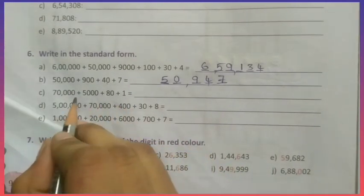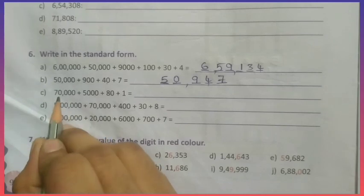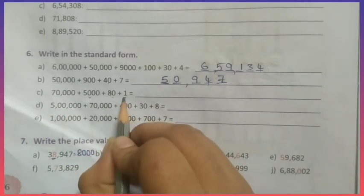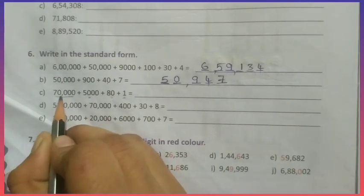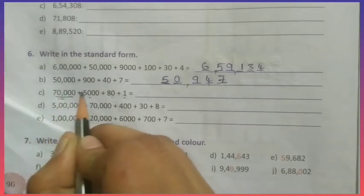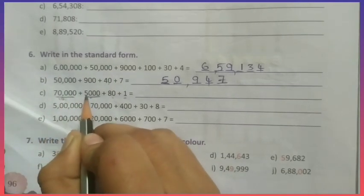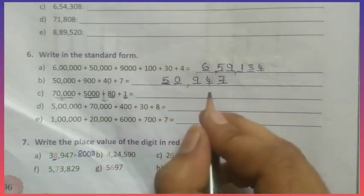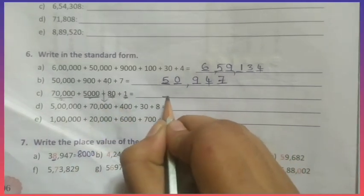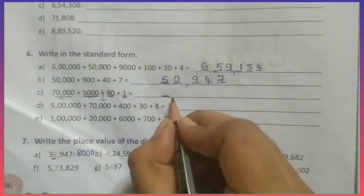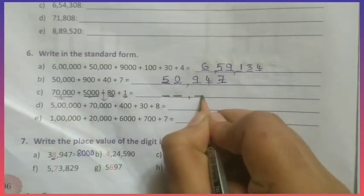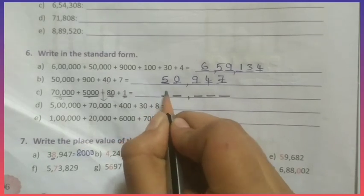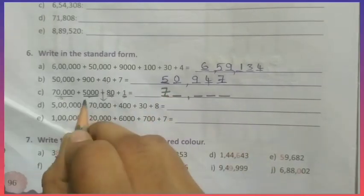So many students have written this one wrong. The number is 70,000 plus 5,000 plus 80 plus 1. Here 70,000 means the 10,000 place is given, the thousands place is given, and tens and ones are given, but hundreds is not given. So we have to write 0 in the hundreds place. 70,000 means it is a 5-digit number, so in the 10,000 place we write 7.